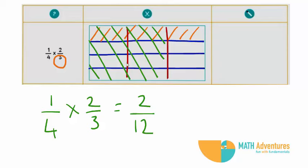As my rectangle is now divided into 12 parts and 2 parts have both colors orange and green, you could further simplify 2 by 12 as 1 by 6.